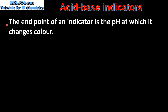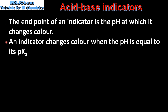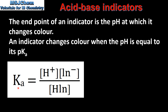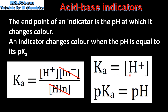Next we look at the end point. The end point of an indicator is the pH at which it changes color. An indicator changes color when the pH is equal to its pKa. Because indicators are weak acids we can write an expression for the acid dissociation constant Ka. When the indicator is in the middle of its color change, the concentration of the dissociated form is equal to the concentration of the undissociated form. Therefore these two cancel out in the equation and we are left with Ka equal to the concentration of the hydronium ions. If we take the log of both sides, an indicator changes color when the pKa is equal to the pH of the solution.